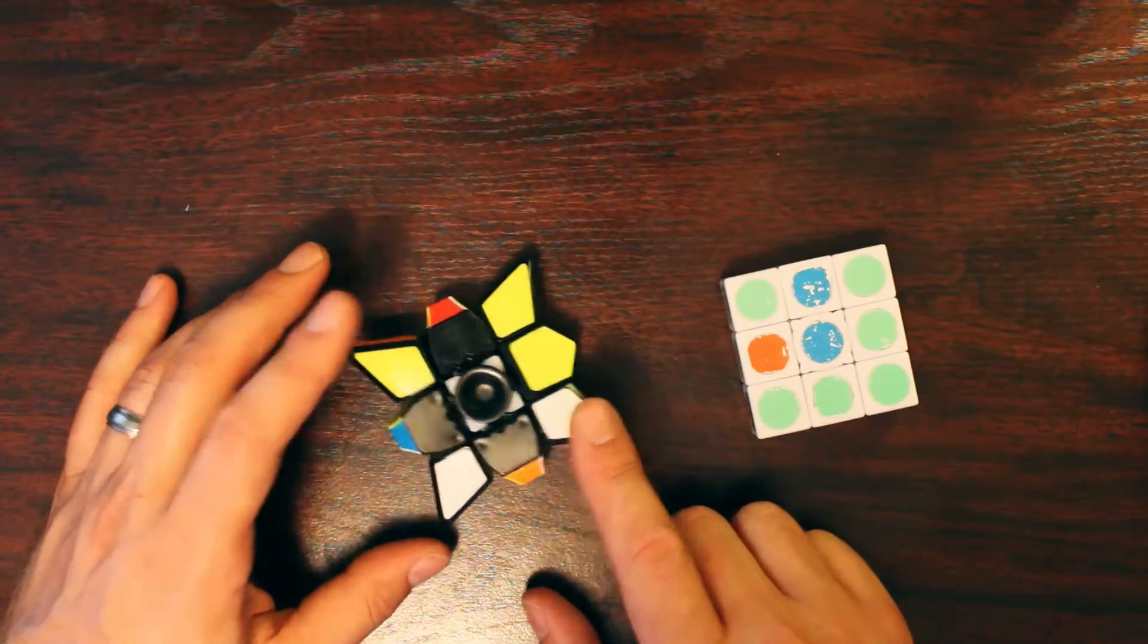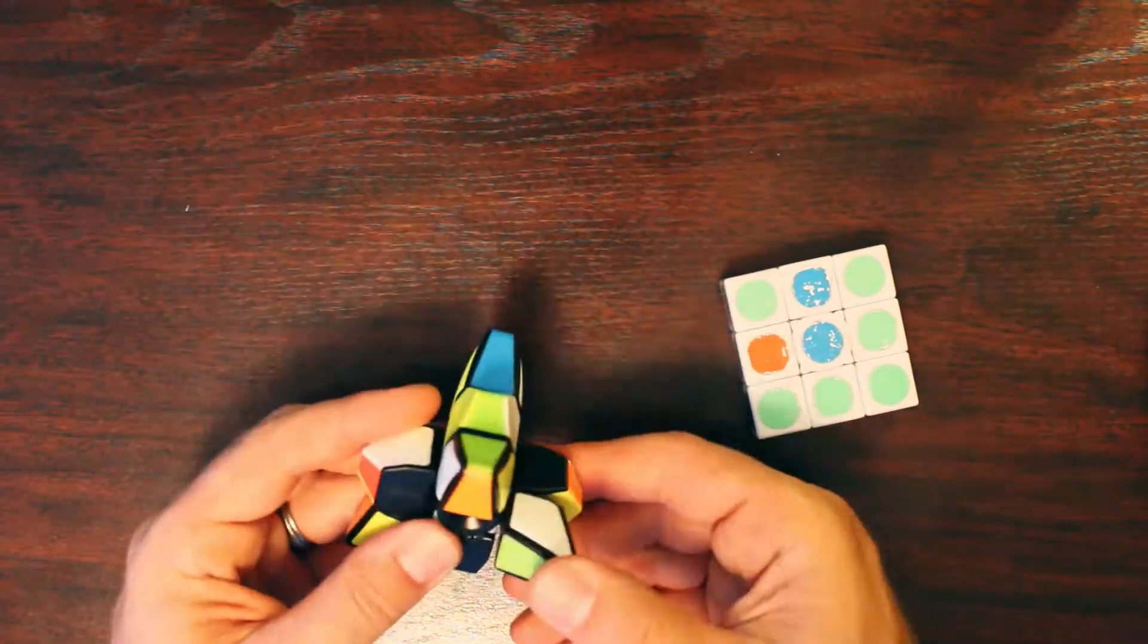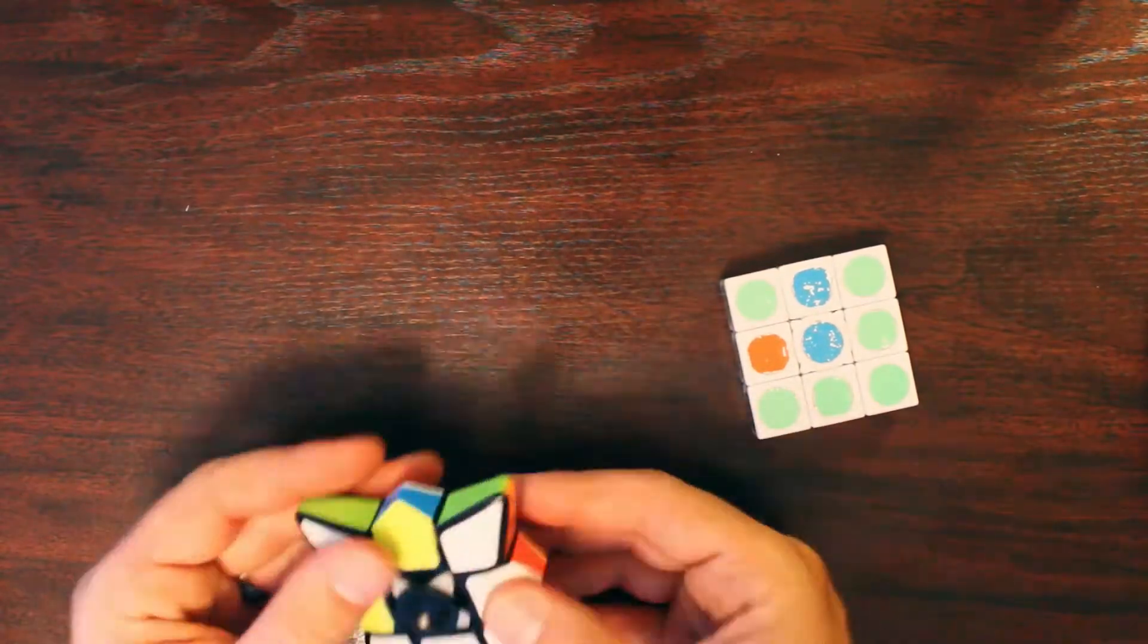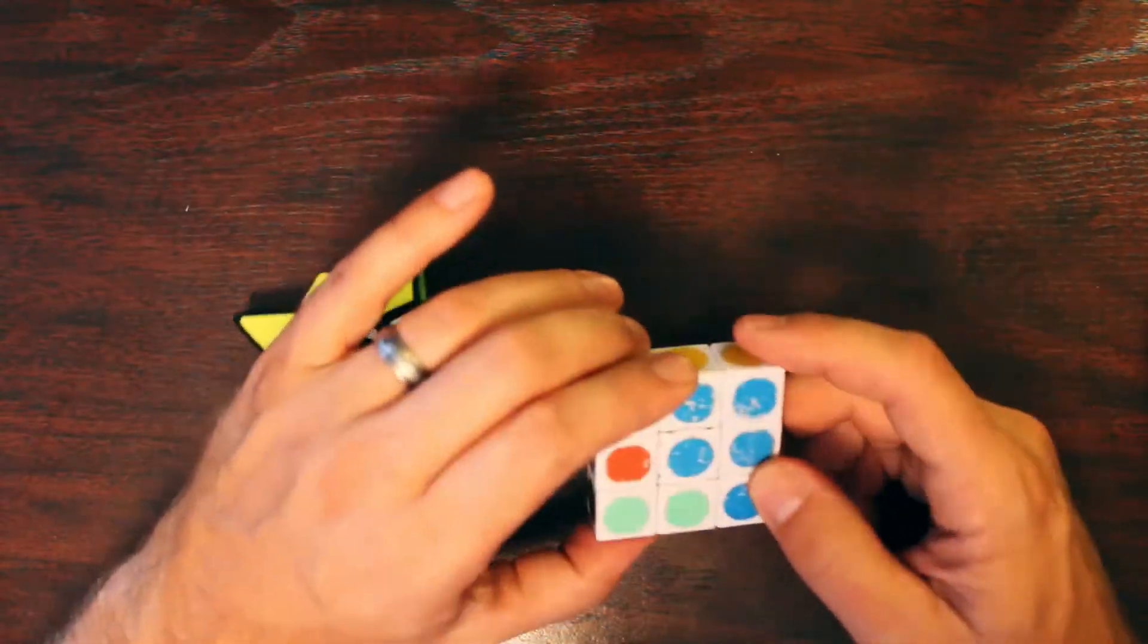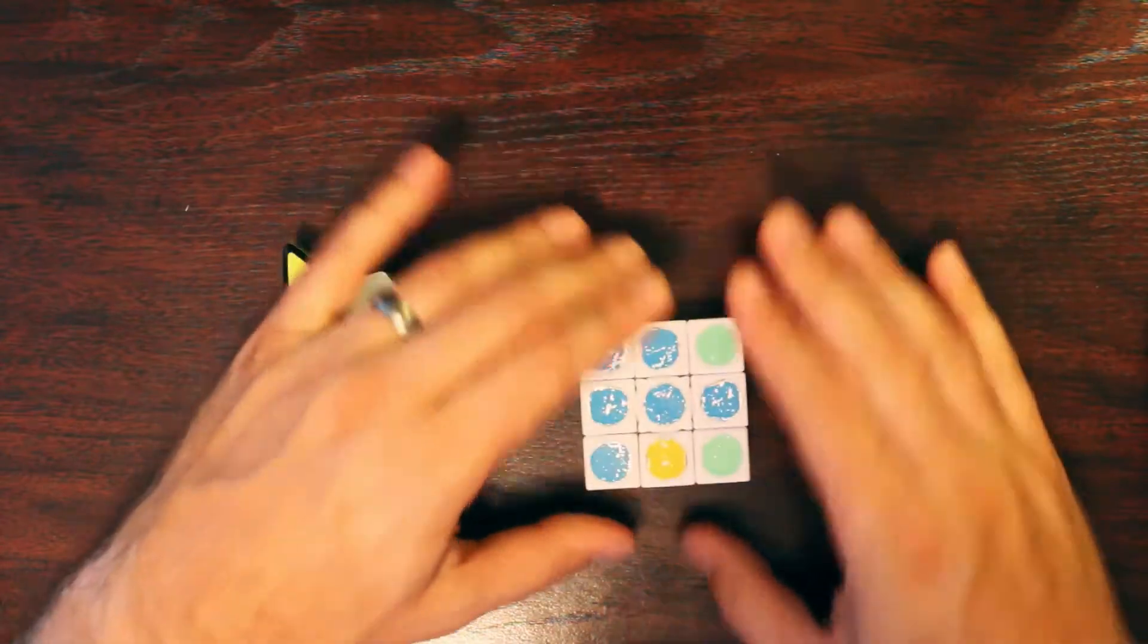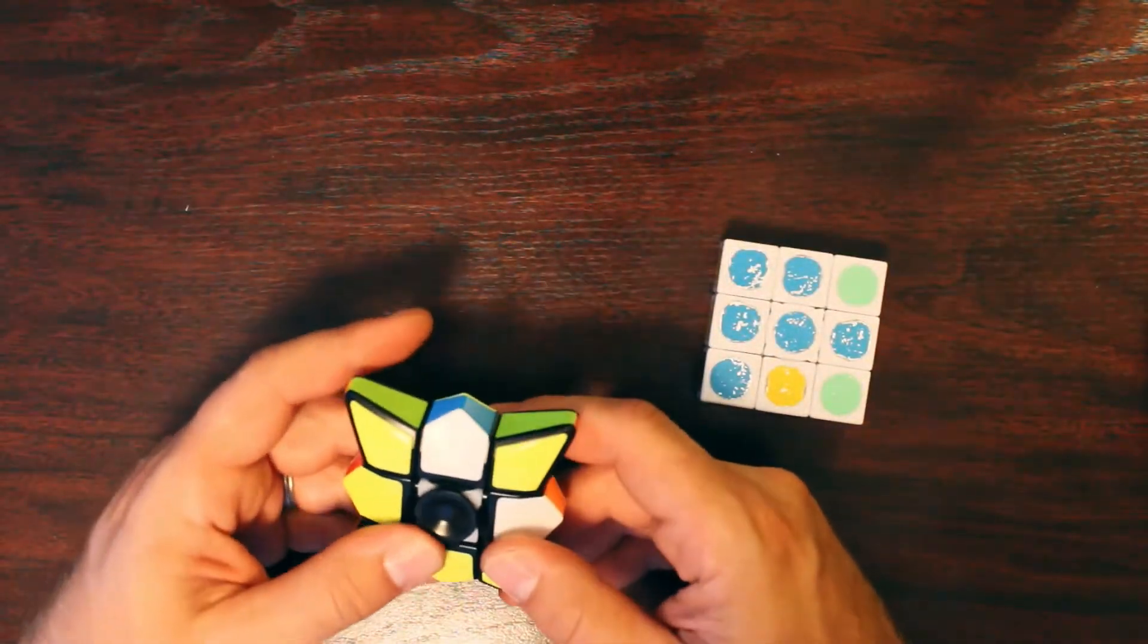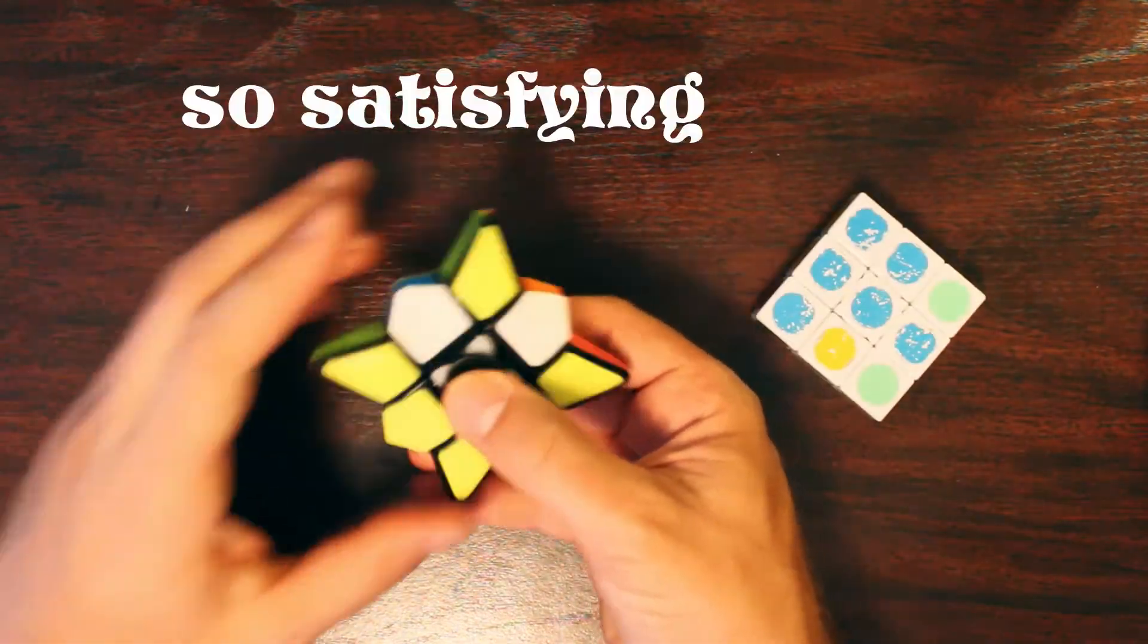Whereas this one will line up in any position you put it in. This won't like that. This has to be in the right position. So comparison-wise, I like that about this one. It lines up everywhere nicely, every which way. This one doesn't like certain positions. But the spinning is very satisfying.